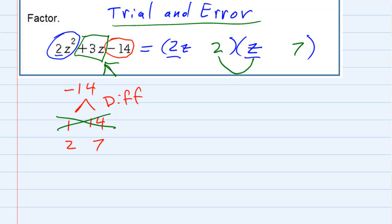Trying those, the inner gives us 2z. The outer gives us 14z. 2z and 14z, I can't add those and get our 3z. So the 2 and the 7 do not work either. And just as we were about to give up, we have to try the other way around.